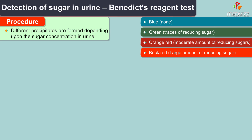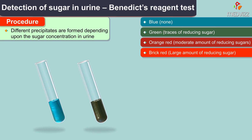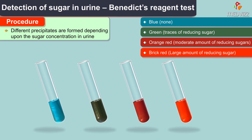Each of these colors denotes different types of sugars. The blue precipitate denotes that there is no sugar in the urine, while the green precipitate shows that there are traces of reducing sugars. The orange and red denotes that there are moderate amounts of reducing sugars, while brick red precipitate denotes that there are large amounts of reducing sugars.